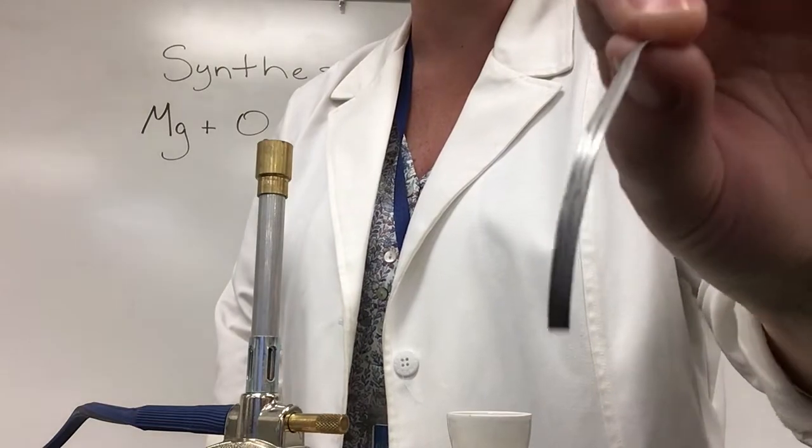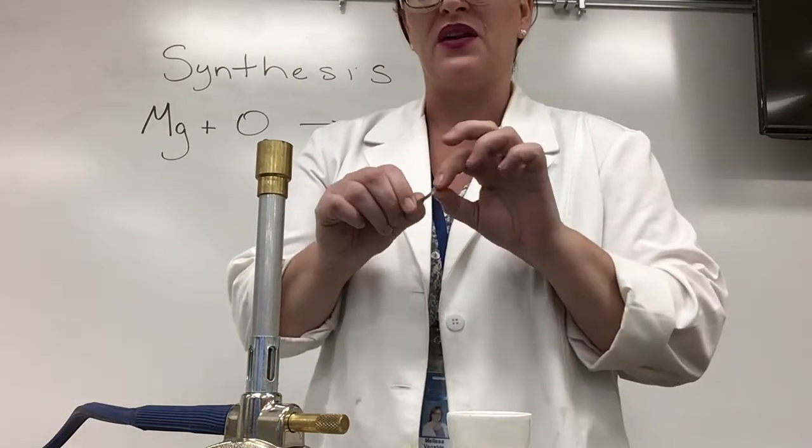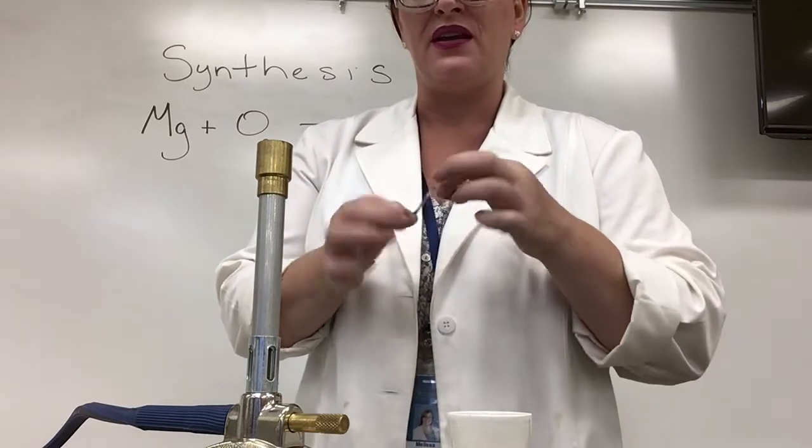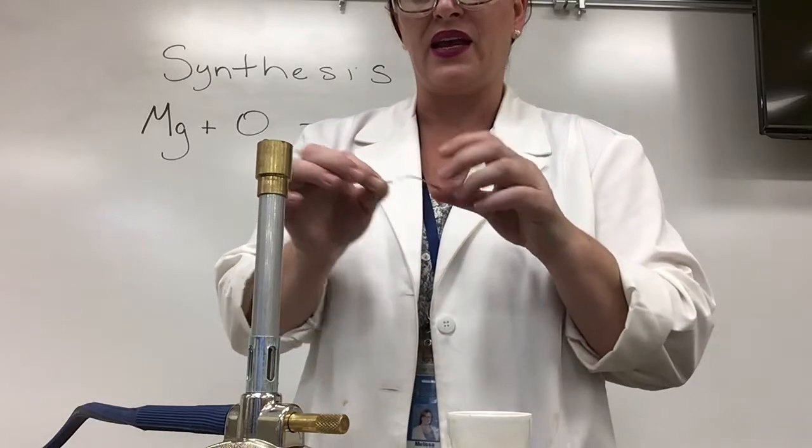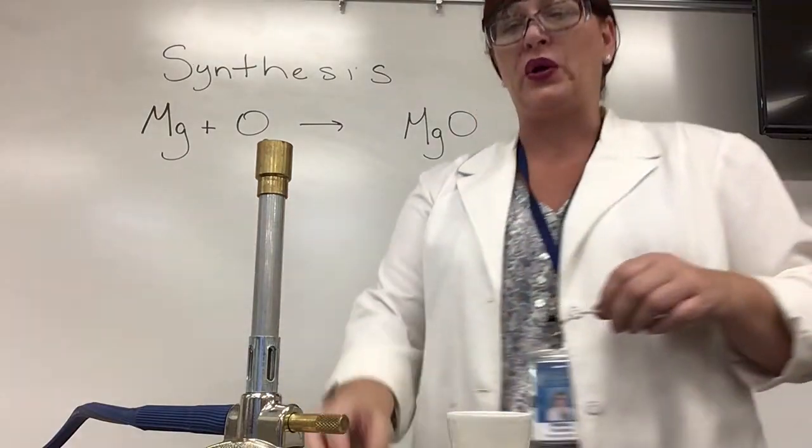Magnesium is a metal and you can see that it's very silvery in color. It's kind of a soft metal, it's silvery white, it's very malleable which means I can bend it and flex it, and it's ductile which means I can pull it into a wire shape. And we're gonna react this with oxygen which means we're gonna burn it.